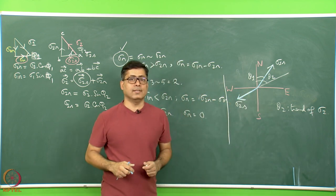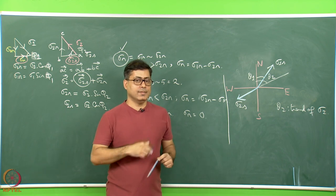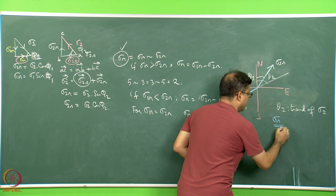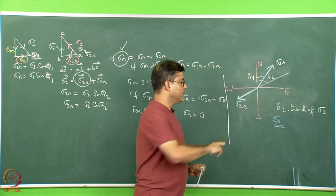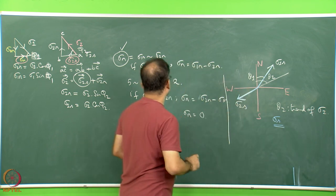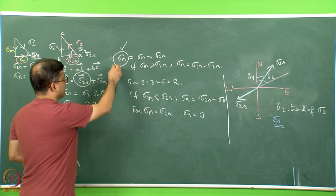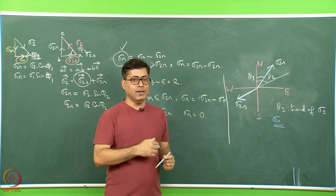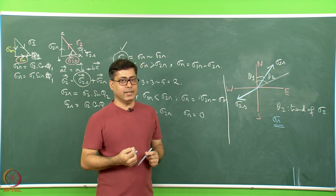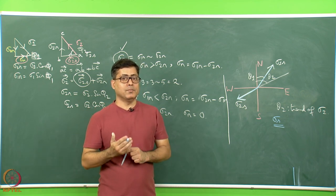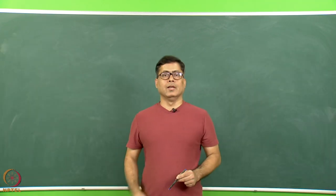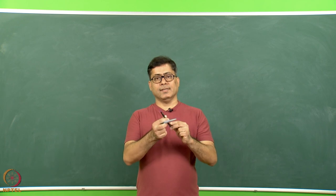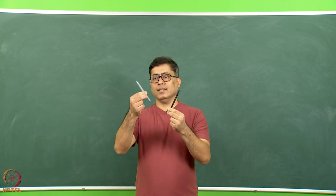We now have both sigma 1s and sigma 2s drawn. From here I find the resultant shear stress sigma s. Once the resultant shear stress is obtained and we have already obtained the normal stress, following the earlier argument we can find out the plunge and trend of the grand resultant stress sigma r.